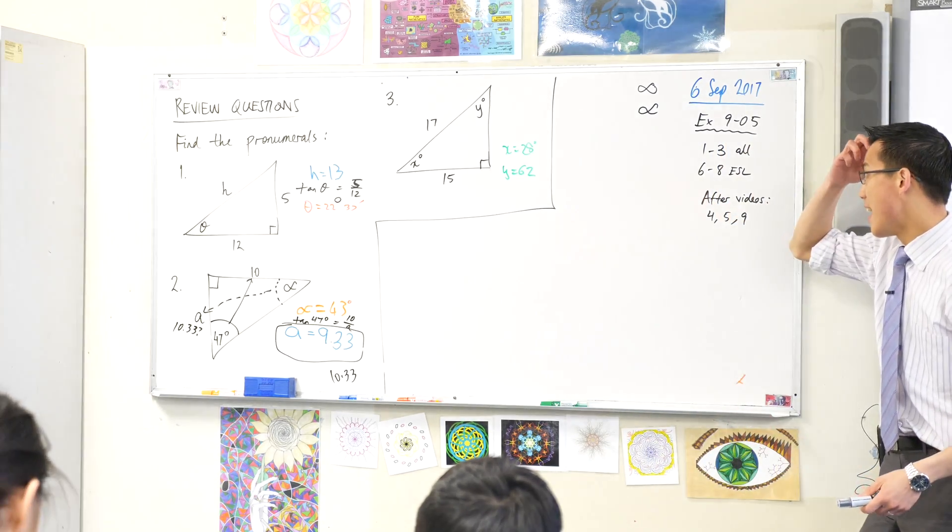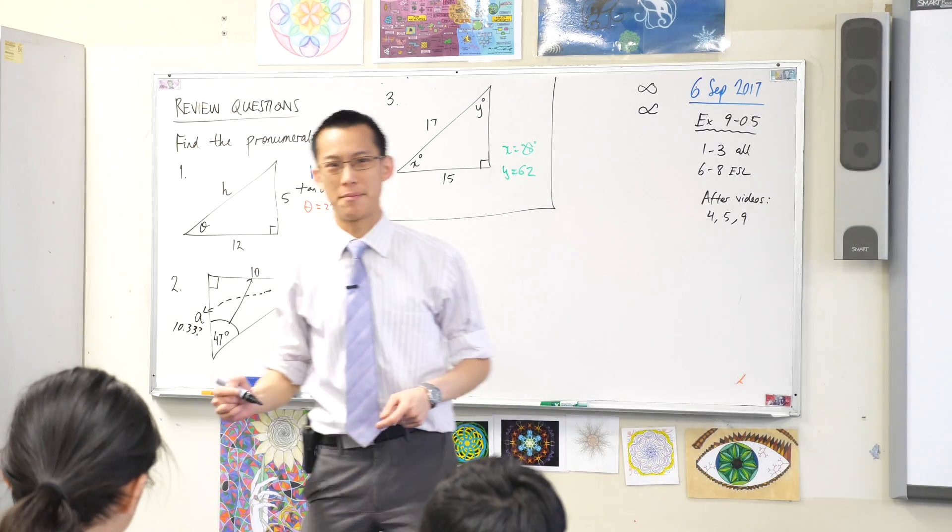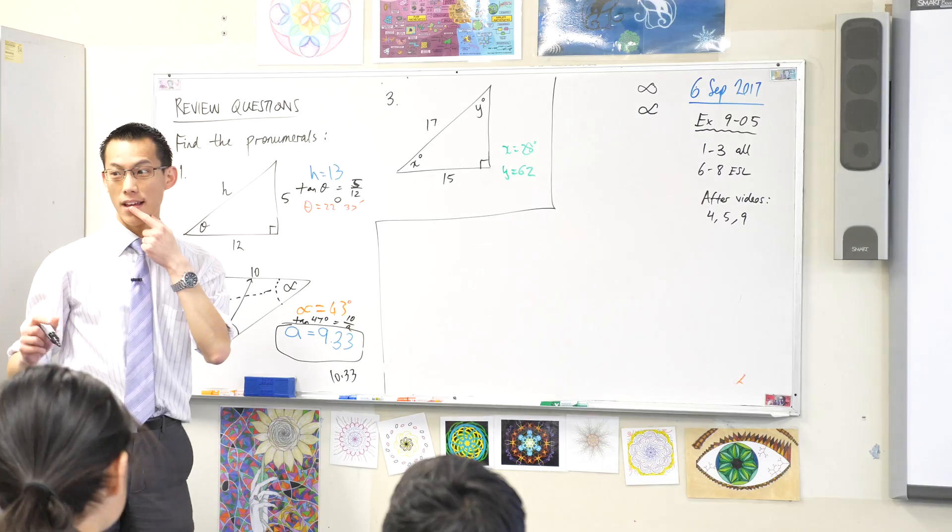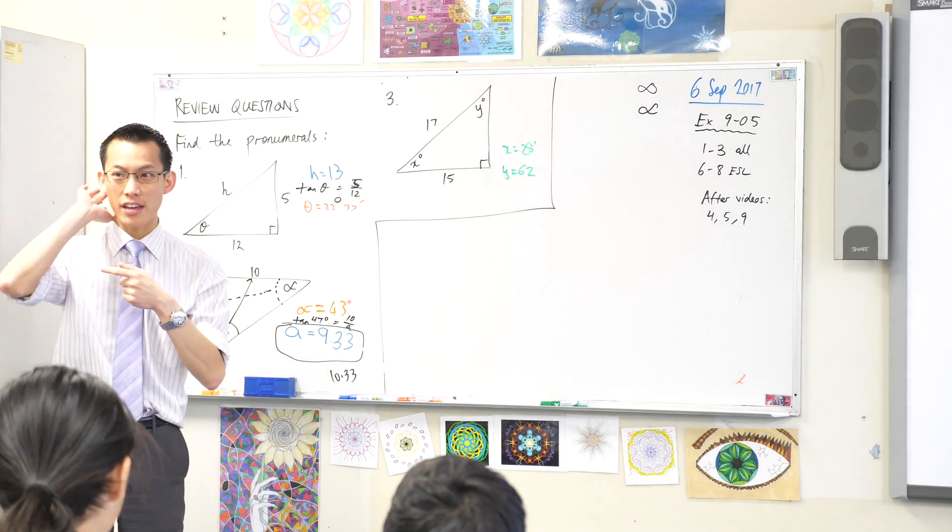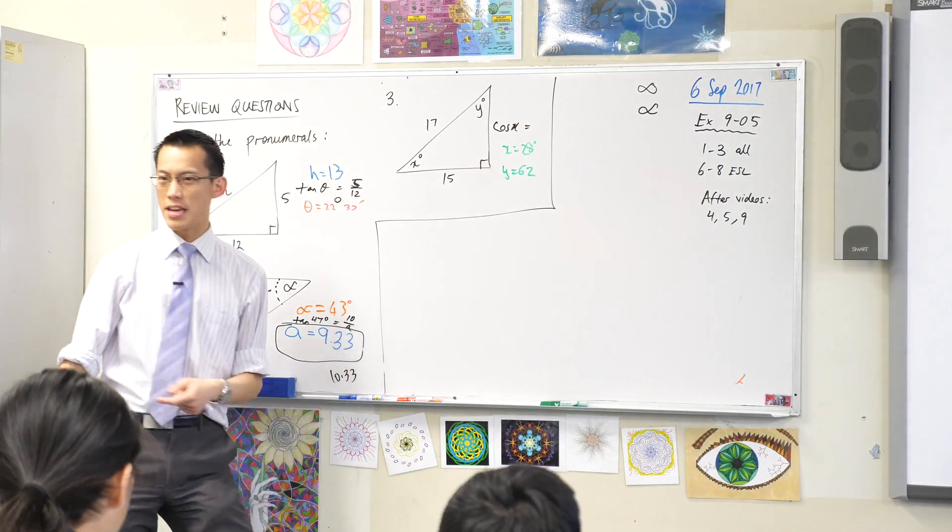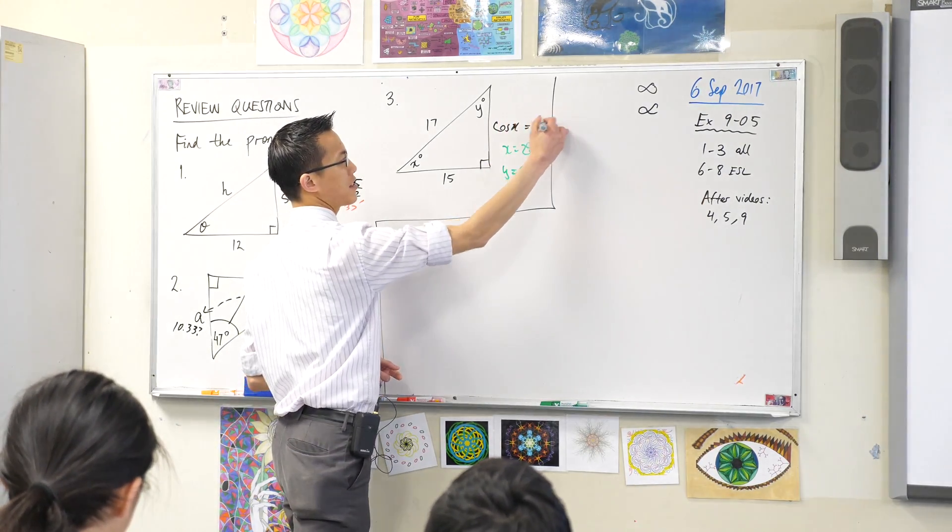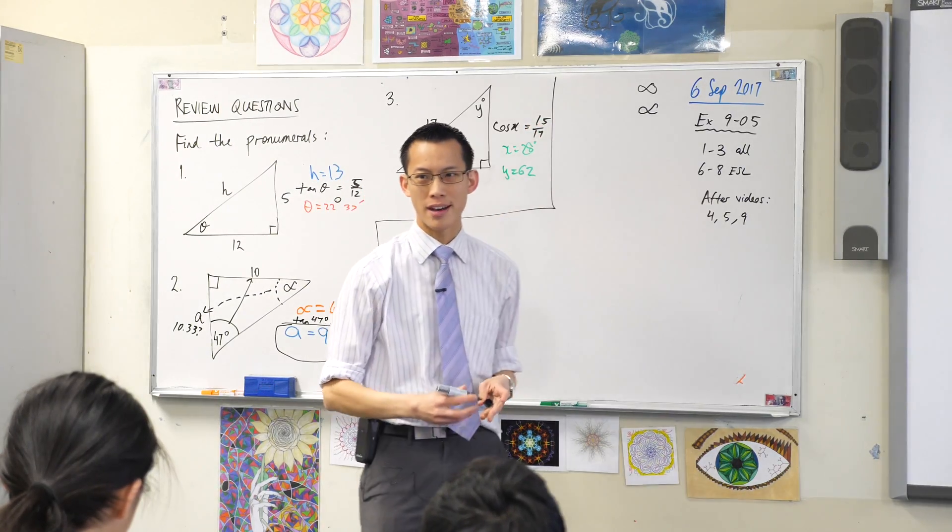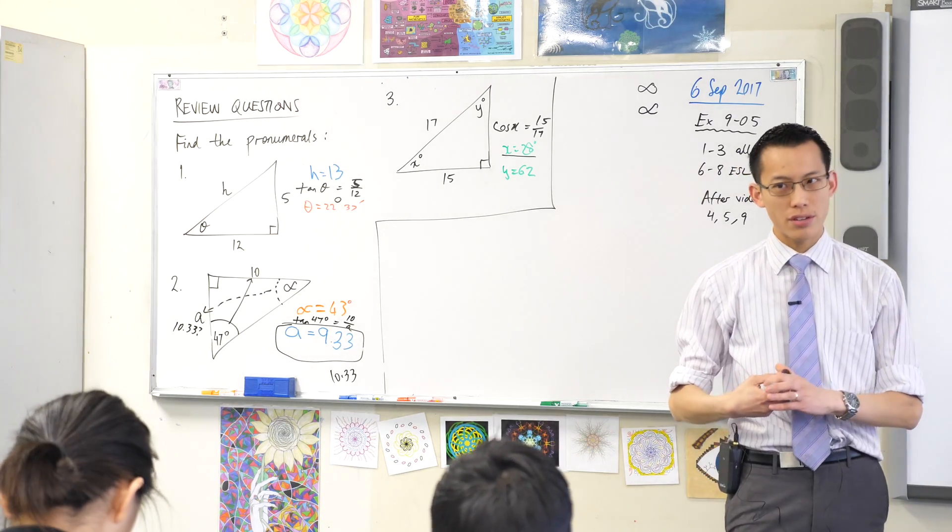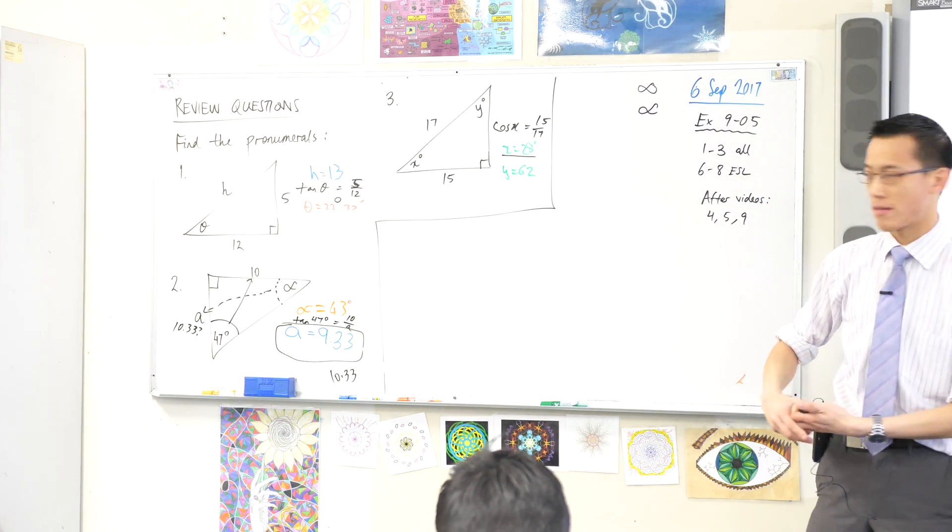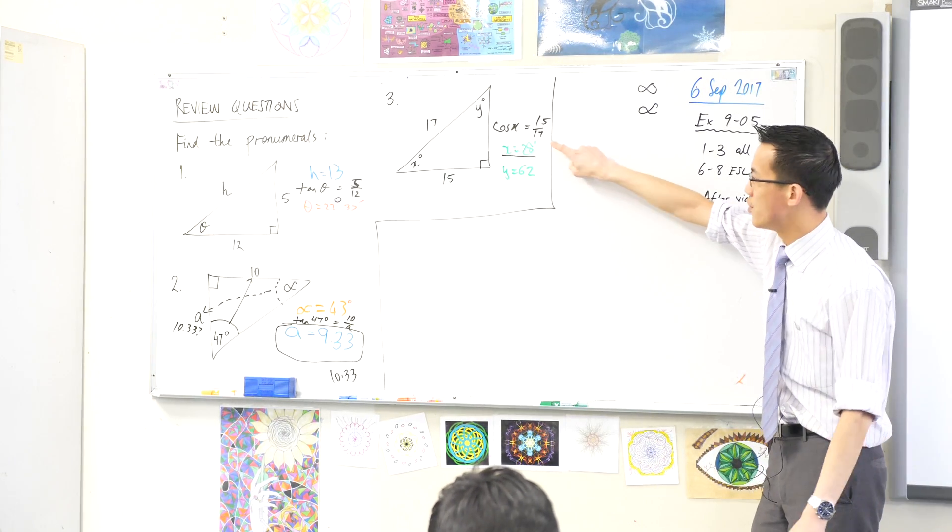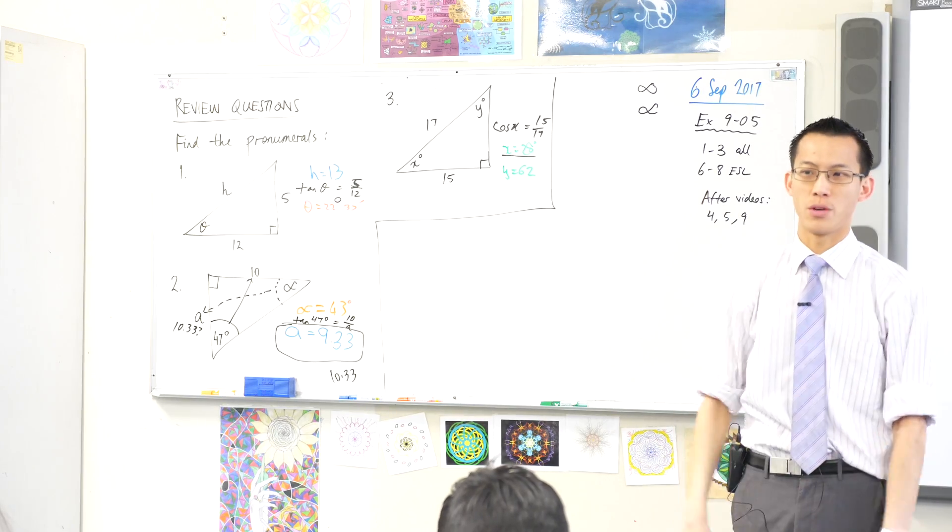Last one. X equals 28. What's the line before that? We're going to use a ratio. We're going to use cosine. Cos of X is going to be equal to adjacent on hypotenuse. Now once you do that, once you get X, you don't need to use trigonometry to find Y or the other way around. What's the relationship between these two angles? Same one before, they're complementary. So you can get the next one without any calculator work at all.